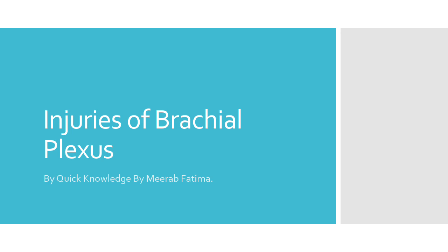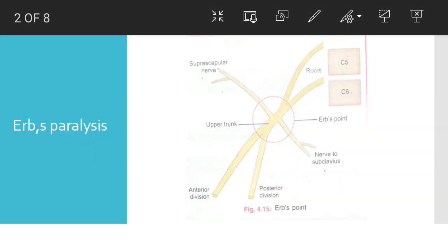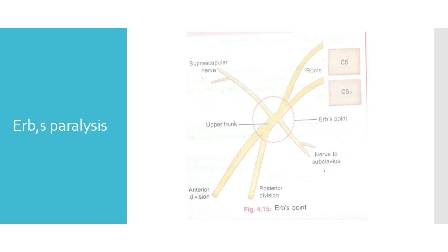Welcome to my channel, Quick Knowledge by Meera Fatma. Today's lecture is about injuries of the brachial plexus. Injuries of the brachial plexus are of two types: Erb's paralysis and Klumpke's paralysis. In this video, we will talk about Erb's paralysis.